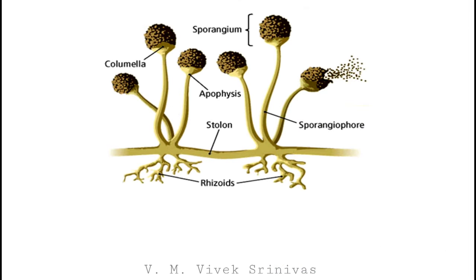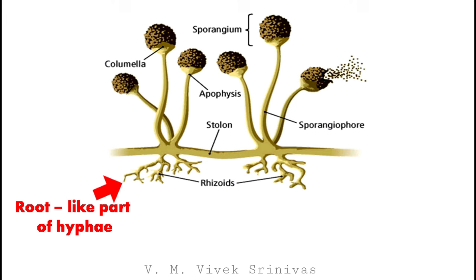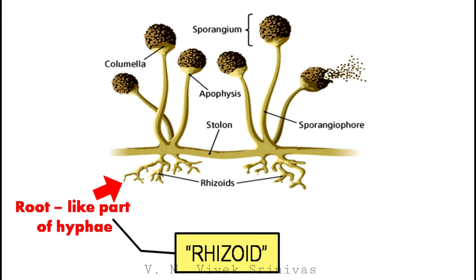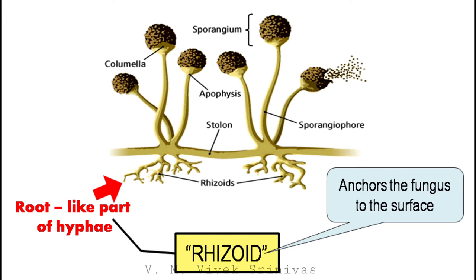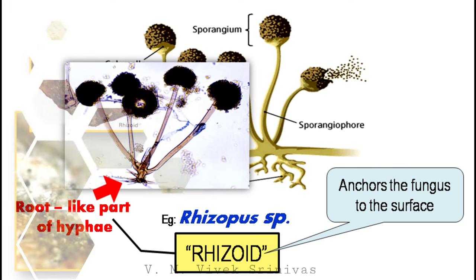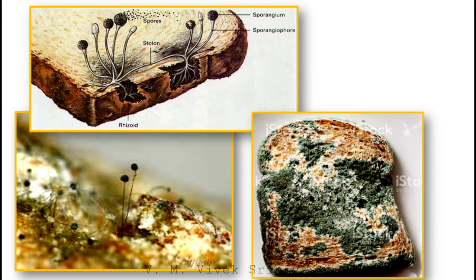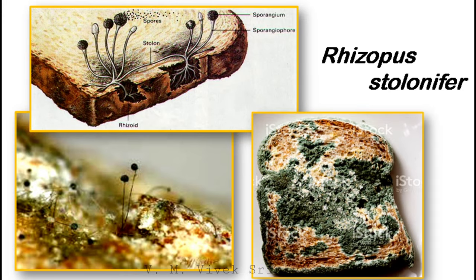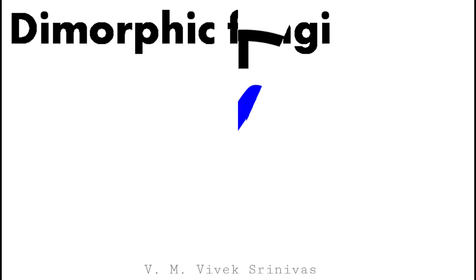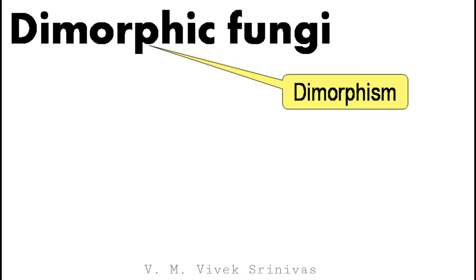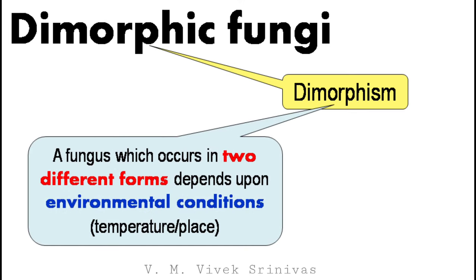Some molds have a root-like part arising from the hyphae called rhizoids, which anchor the fungus to the surface. Rhizopus is one fungus that possesses this structure. The bread mold caused by Rhizopus stolonifer, which infects bread, also possesses rhizoids for anchoring.